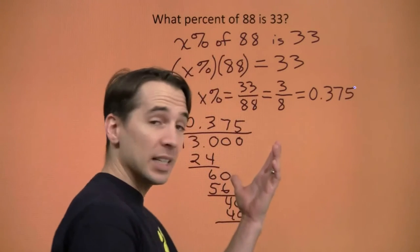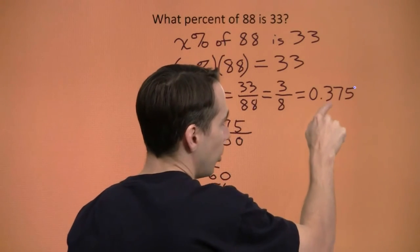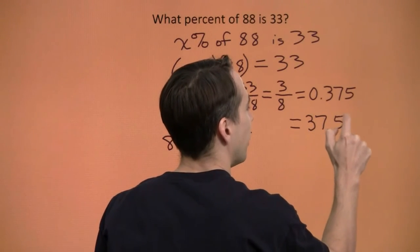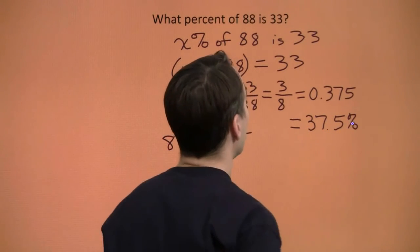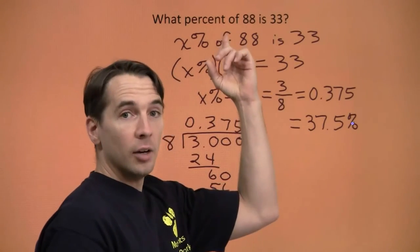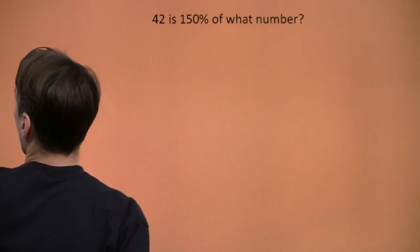And we know how to turn that decimal into a percent. We just slide that decimal point two places over, and that is 37.5 percent. So 33 is 37.5 percent of 88, and we're ready for the next problem.